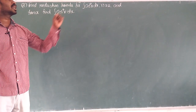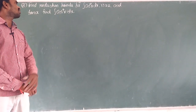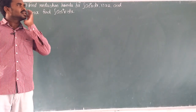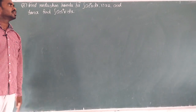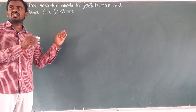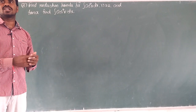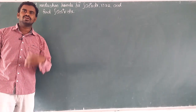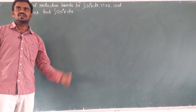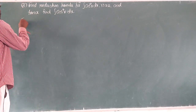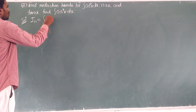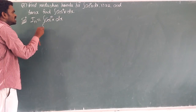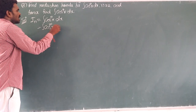Next is the second question: find the reduction formula for integration of cos^n(x) dx, where n is greater than or equal to 2, and hence find the integration of cos^4(x) dx. This is the same method as the first question. Let I_n = ∫cos^n(x) dx, written as ∫cos^(n-1)(x)·cos(x) dx. Apply the uv integration formula.